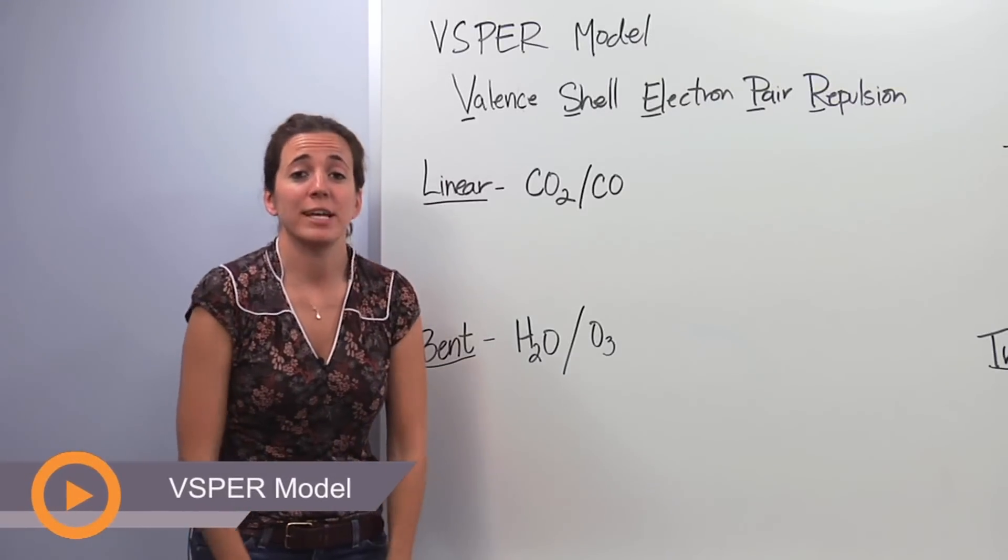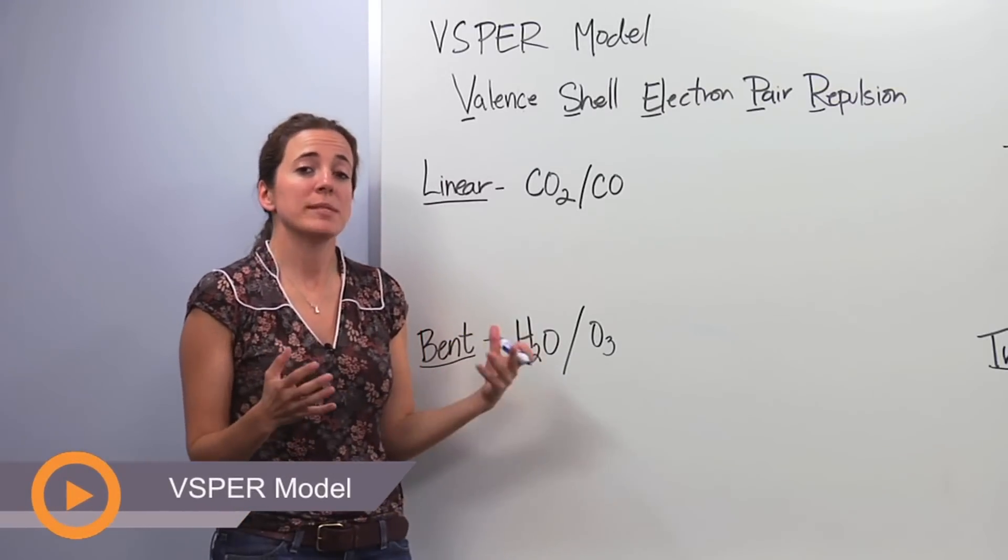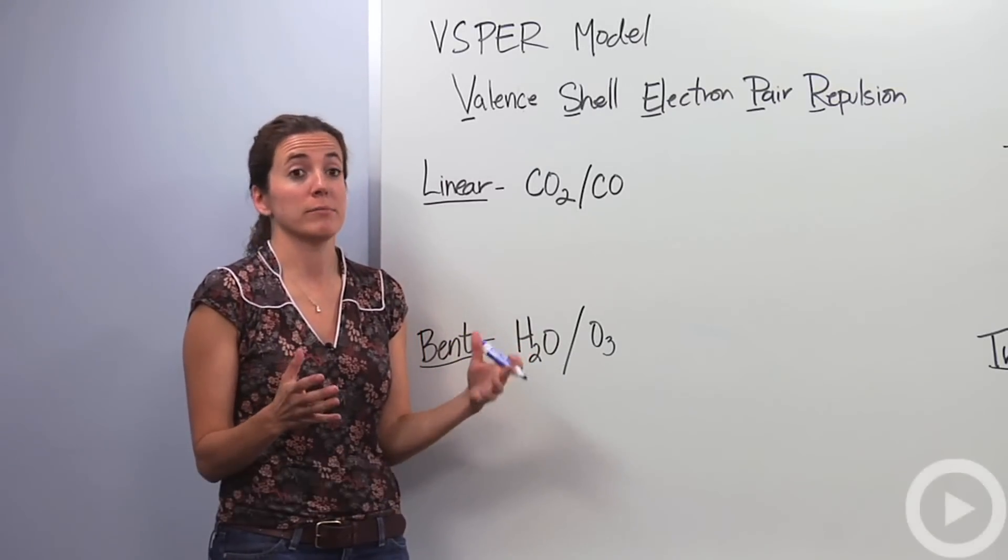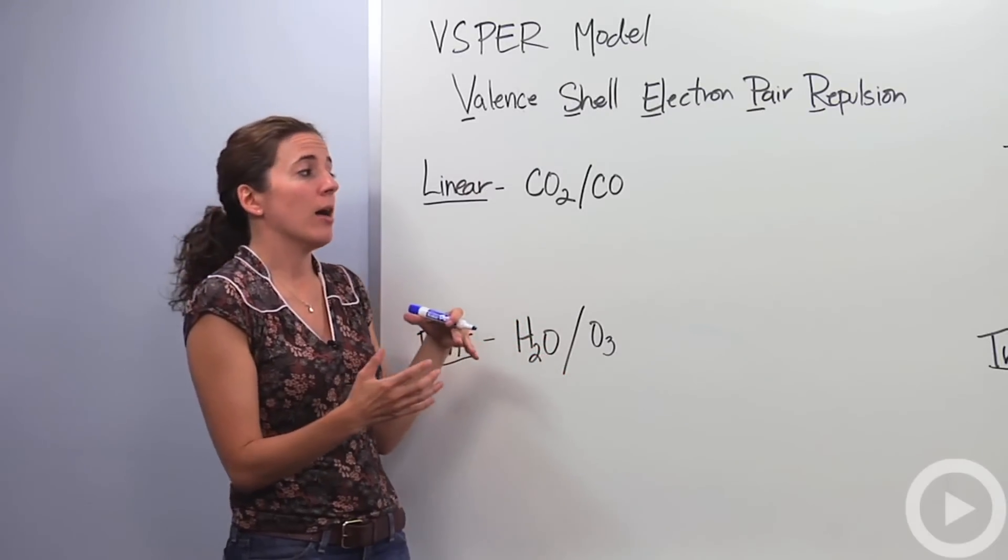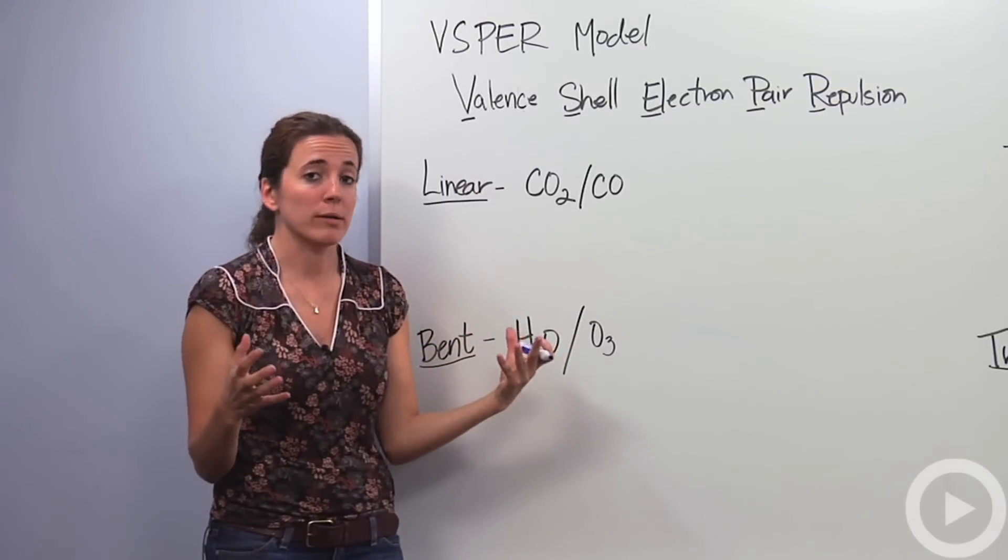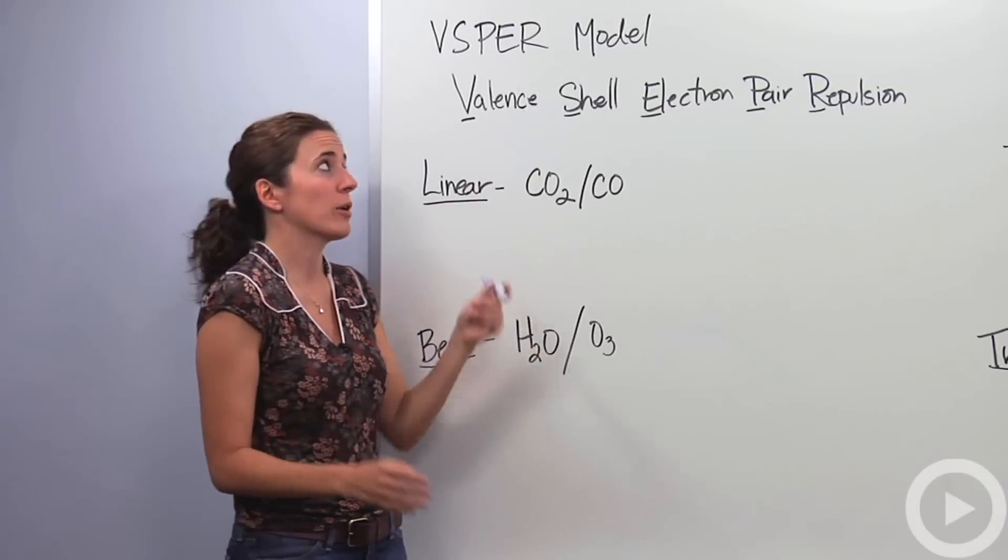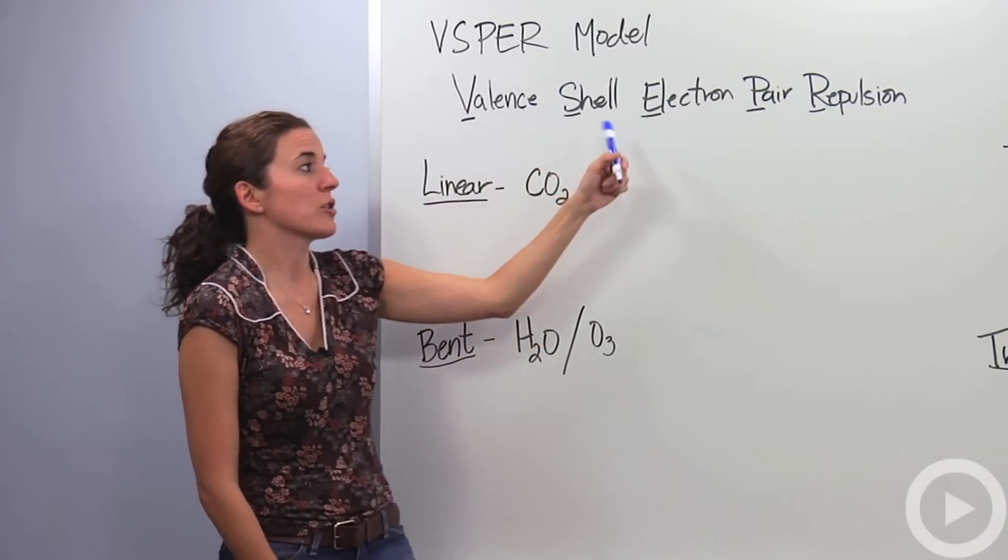Alright, so we're going to talk about VSEPR models, basically the shapes that covalent compounds take when they come together. So we've drawn Lewis dot diagrams, now we're going to take them and make them three-dimensional models and actually what they look like in space. We're going to call that VSEPR, valence shell electron pair repulsion.